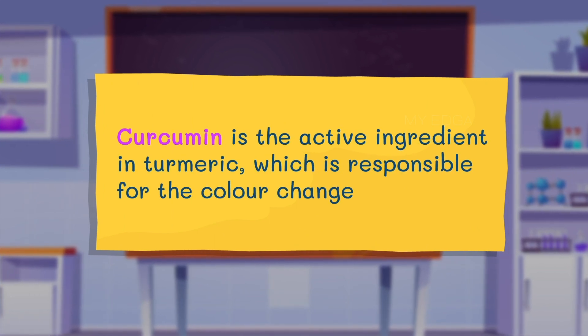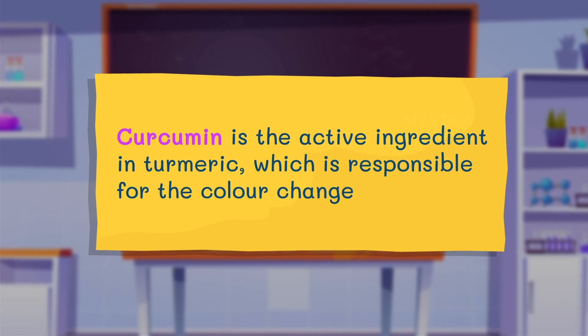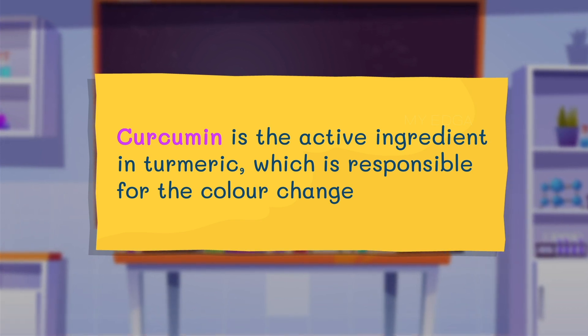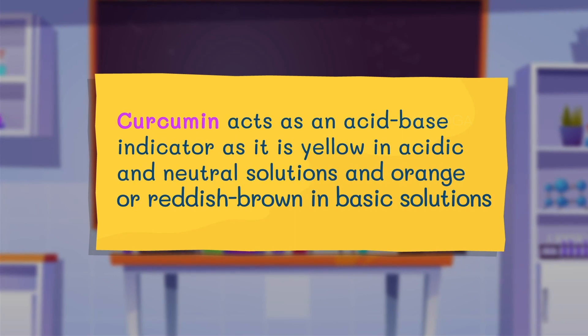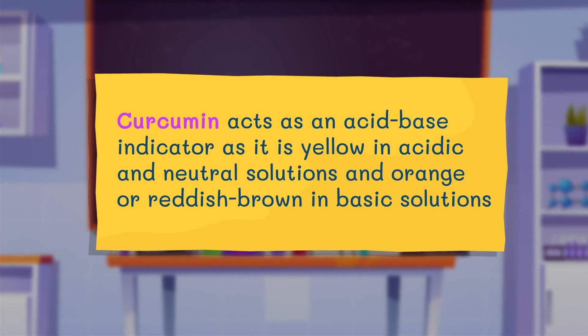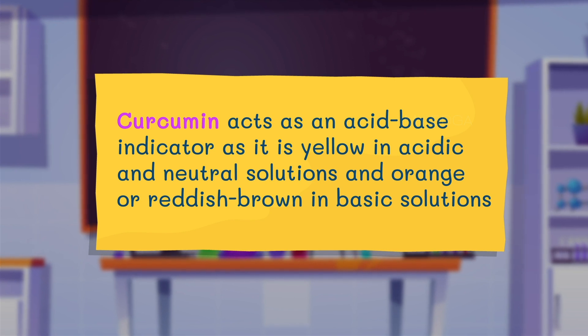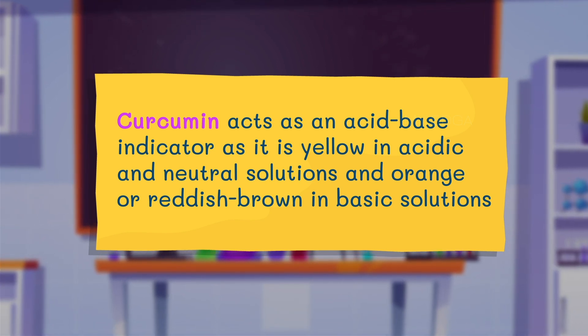Curcumin, which is the active ingredient in turmeric, is responsible for the color change. Curcumin acts as an acid-base indicator as it is yellow in acidic and neutral solutions and orange or reddish-brown in basic solutions.